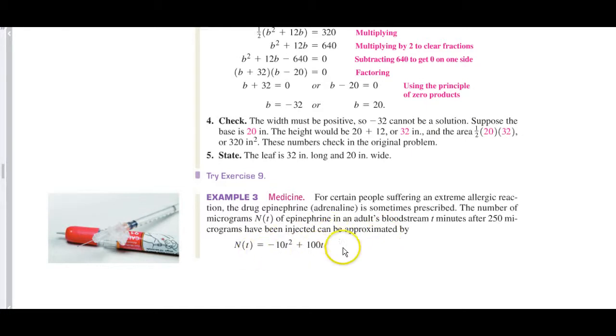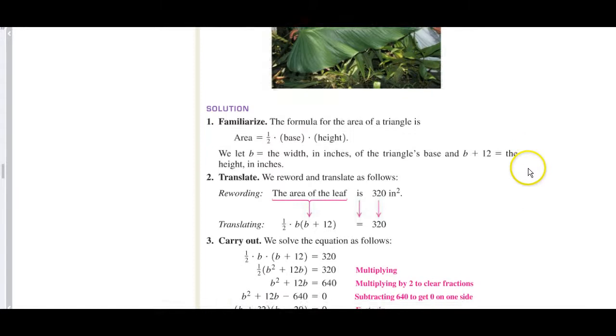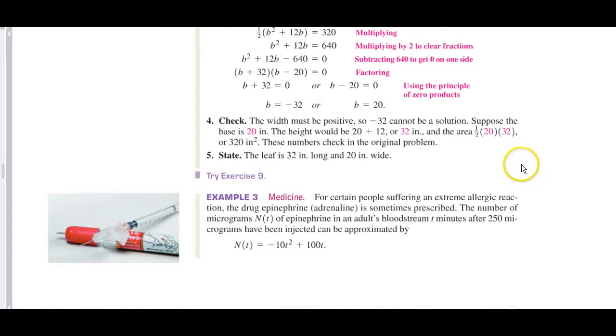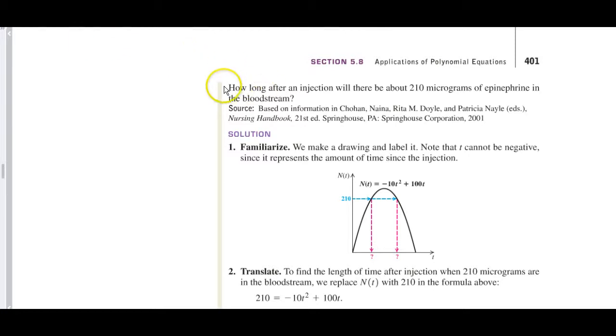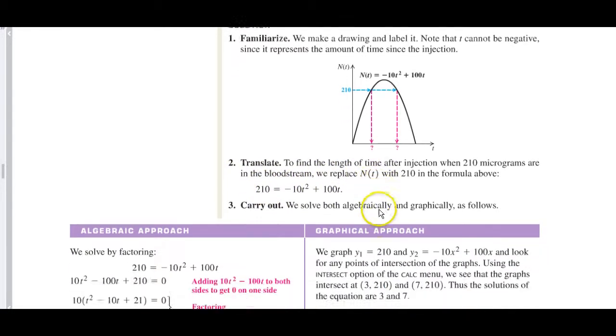So let's take a look at it. How long after an injection will there be about 210 micrograms of epinephrine in the bloodstream? So actually, you're getting a parabola, and they're asking for when will it be 210 on this parabola. You're looking for those values of X. So you will put the 210 there, and then what I would do is transpose everything to the other side. Factor out, looks like you could factor out a 10.